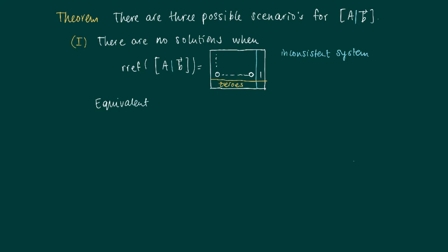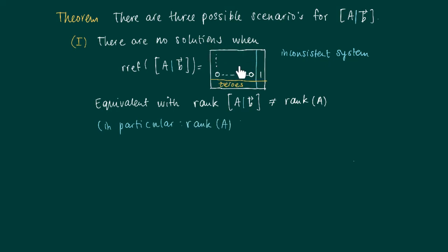This is the same as stating that the rank of the augmented matrix A|B is not equal to — is strictly greater than — the rank of A. We now get one pivot more in the augmented matrix, since the steps to calculate the reduced row echelon form of A|B include those of matrix A found on the left-hand side. In particular, the rank of A is smaller than the number of equations, and we need one additional pivot in the column attached to B.